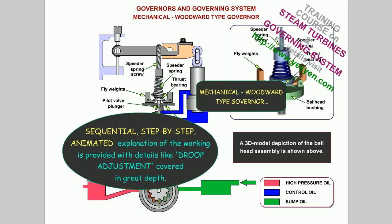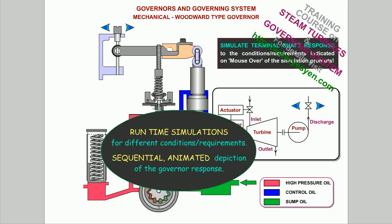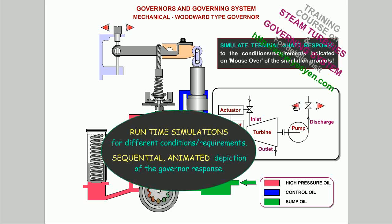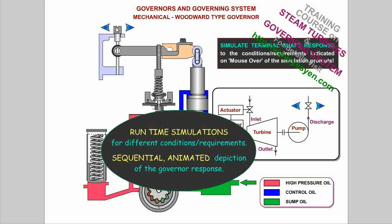The mechanical Woodward type governor is covered with sequential, step-by-step animated explanation of its working, with details like droop adjustment covered in great depth. Runtime simulations for different conditions and requirements, and sequential animated depiction of the governor response, are provided.